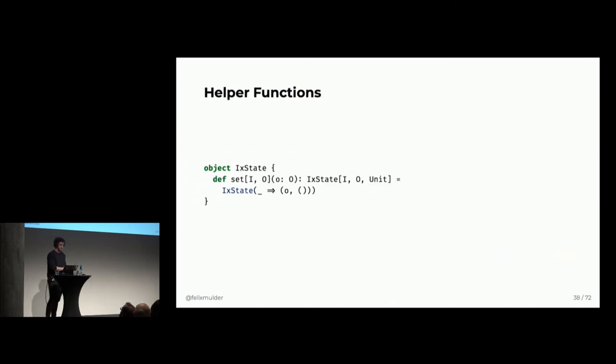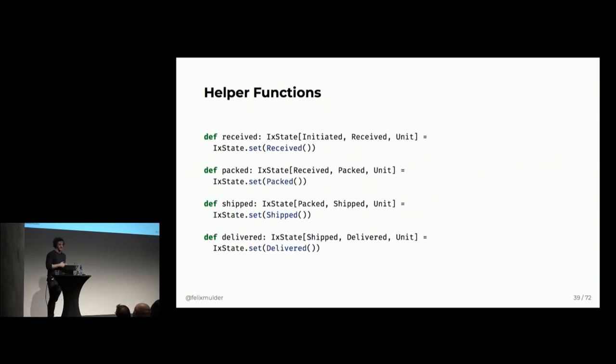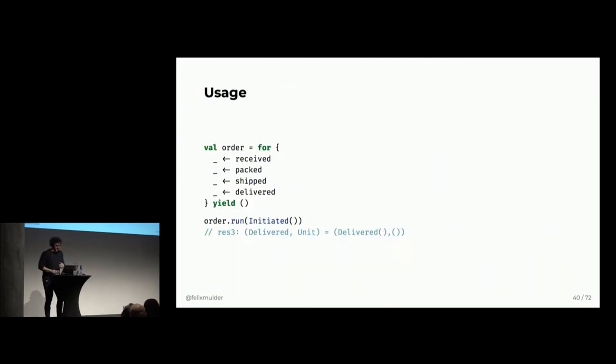So, let's create a simple helper function, just set, that will create an index state from io to unit. And then we can use this. So, now we can create helper functions to create an index state received. So, the received function takes an initiated state and transitions it into a received state. The packed function takes a state that is received and turns it into a packed and so on. So, we chain everything together like this. And now, we can use this in a for comprehension, same as we did before. And since the types line up, we can actually run this program using initiated. And you can see that in the end here, we're in the state delivered.